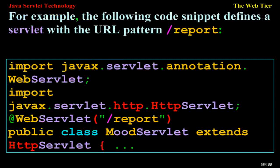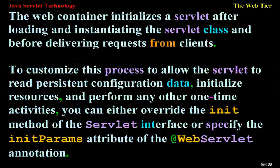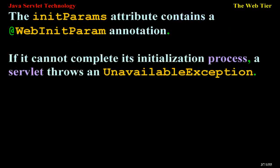For example: import javax.servlet.annotation.WebServlet; import javax.servlet.http.HttpServlet; @WebServlet("/report") public class MoodServlet extends HttpServlet. The web container initializes a servlet after loading and instantiating the servlet class and before delivering requests from clients. To customize this process to allow the servlet to read persistent configuration data, initialize resources, and perform any other one-time activities, you can either override the init method of the servlet interface or specify the initParams attribute of the @WebServlet annotation. If it cannot complete its initialization process, a servlet throws an UnavailableException.